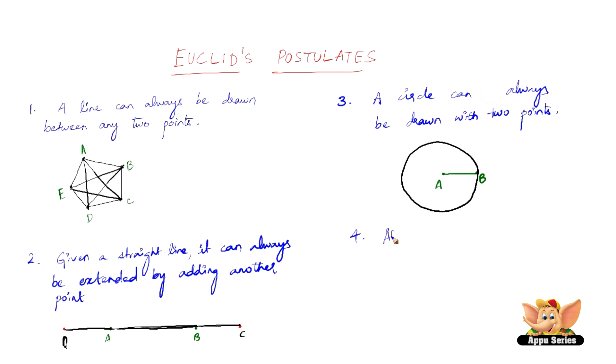And let us go to the fourth postulate. The fourth postulate states that all right angles are equal. Right angles are nothing but two lines when they make 90 degrees are called right angles. All right angles drawn anyhow are always equal.